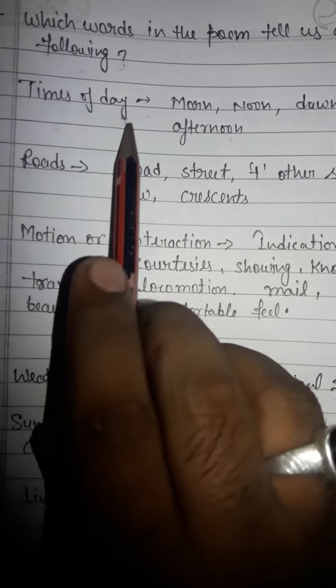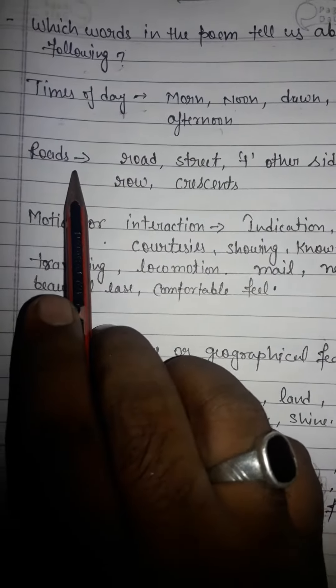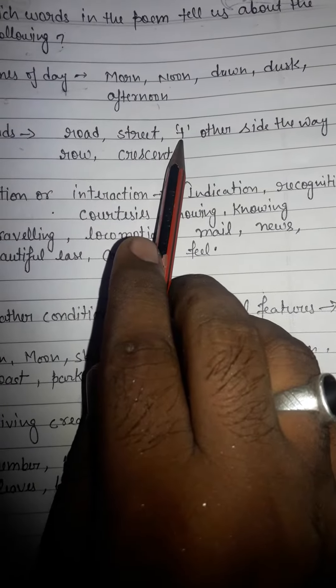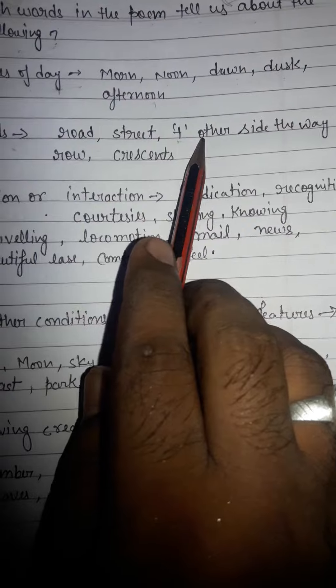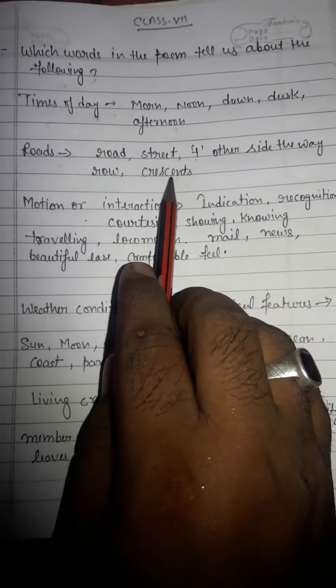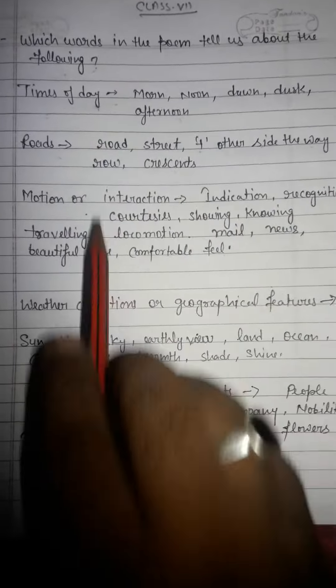So we can find that these come under the times of day. Next, roads. Roads are already mentioned in the poem — road, street, and here 'T' in inverted commas is the other side of the way, and roe or crescent. These are the types of road which are mentioned in the poem.